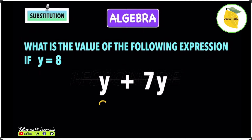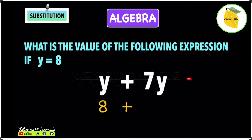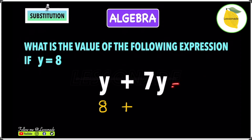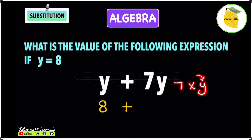Let's first substitute the 8 into the first y, and then move to the second one which is 7y. Now for the 7y, 7y is the same as 7 times y. So when you replace this y you're going to get 7 times 8. Whenever you have a multiplication such as 7y, you're always meant to expand it when you substitute — otherwise you'd be left with 78, which is not right. You have to expand it to 7 times y and then substitute the y to get 7 times 8.